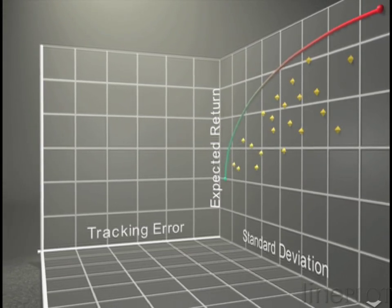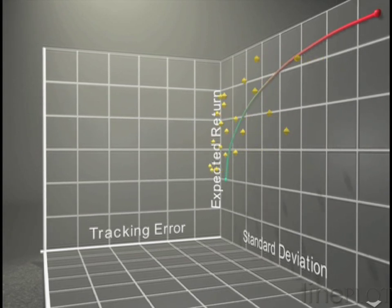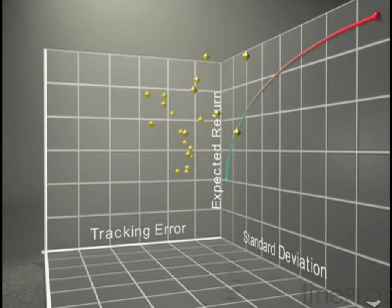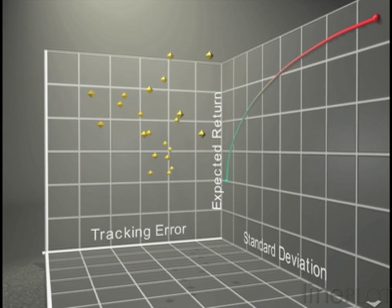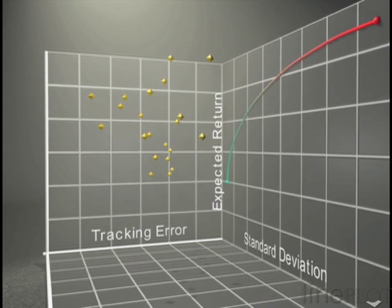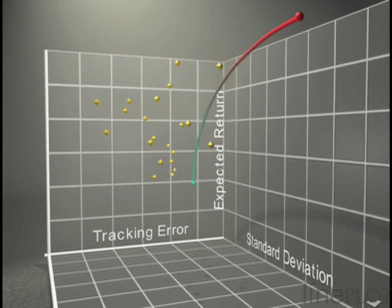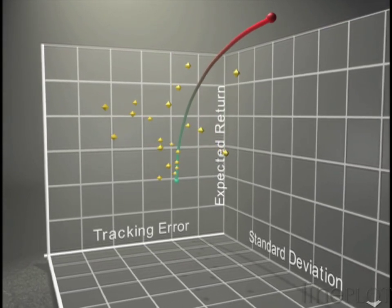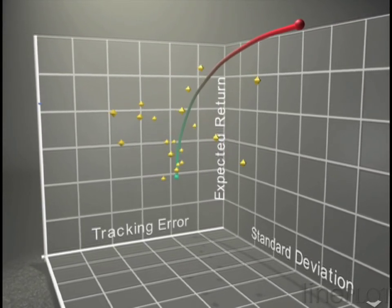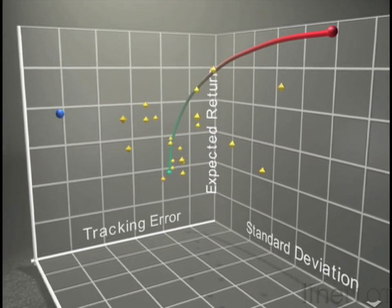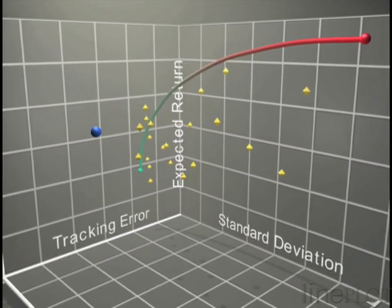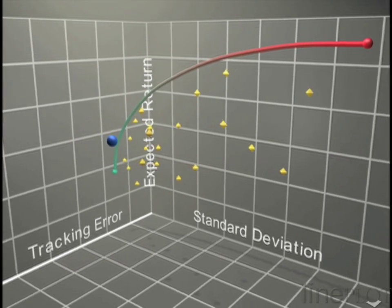Now we can locate each asset according to its expected return, standard deviation, and tracking error. We can also locate the mean variance efficient frontier according to the tracking error of the portfolios it includes. The benchmark, of course, has no tracking error. We can trace a second efficient frontier called the mean tracking error efficient frontier.